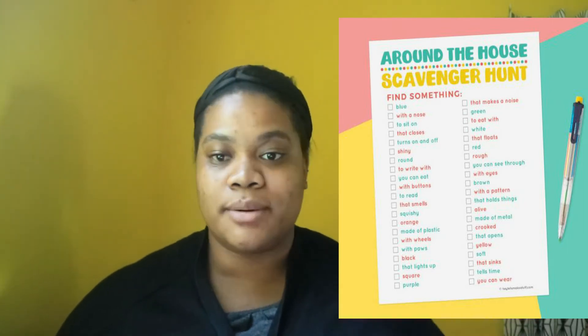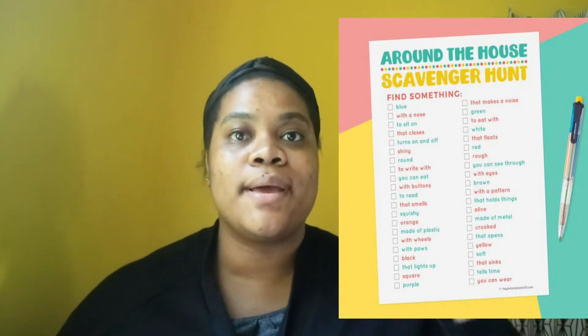You put the scavenger list up on the screen, give them a certain amount of time, and when they come back each person shows what they have. So you ask, 'Let me see everybody's blue thing' and everybody holds it up. You can ask them to find something taller than themselves. Ensure there are some things that are easy and some that are hard to find so not everybody has everything — it's a way to challenge them.